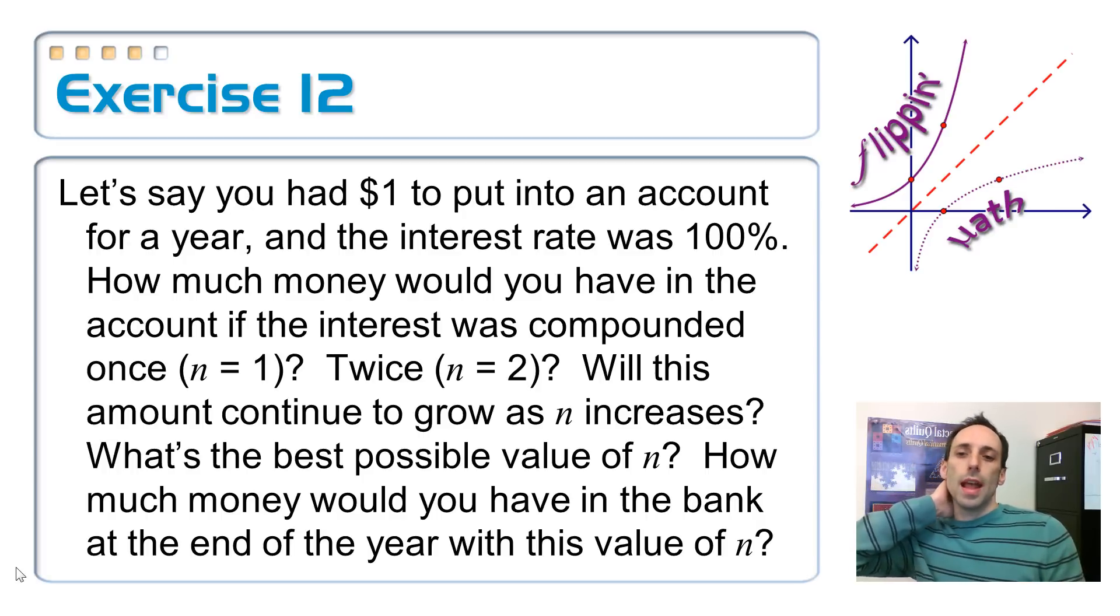So how much money are you going to have in that account if the interest is compounded only once, or twice, or three times, or four times, or daily, or whatever? So is that amount going to increase without bound? Is it going to just get exponentially bigger and never ever stop? Or is there something that is going to stop at?